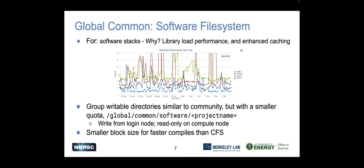The next auxiliary file system is global common. This file system is for installing software stacks. If your application has lots of dependencies and needs a lot of things you have to install yourself, or if you're installing software for your whole group and want to share it, you want to put it in global common. At scale on the system, global common is the best file system for delivering a software stack. You'll get best performance if you use a container, but if you don't want to do that, put your software in global common. Each project gets a directory there, and you can navigate to `/global/common/software/<project_name>` to create a subdirectory and write your software as needed.